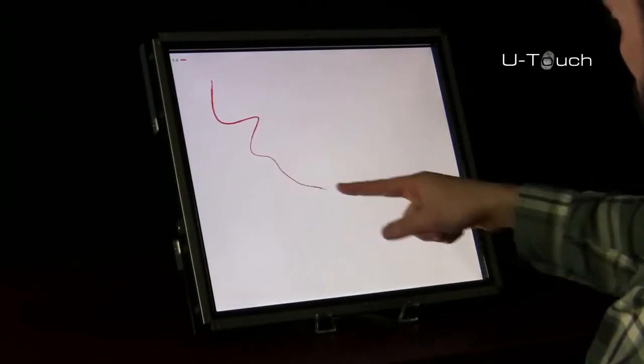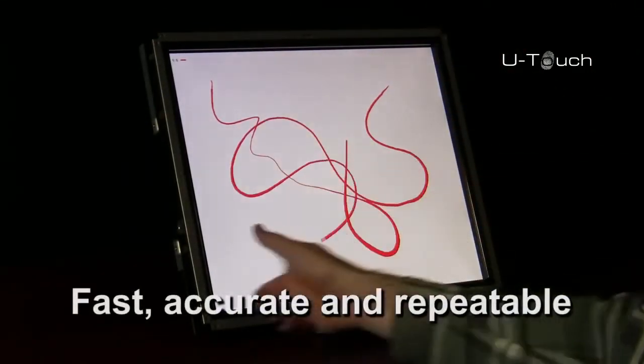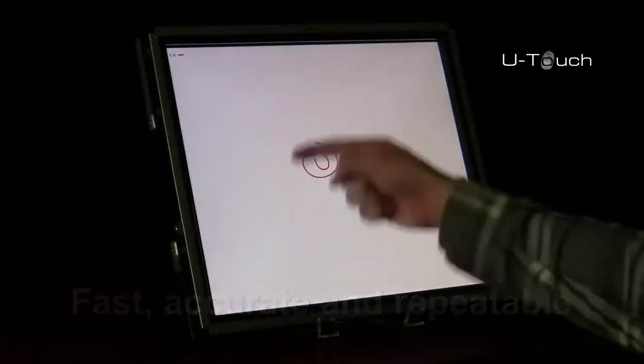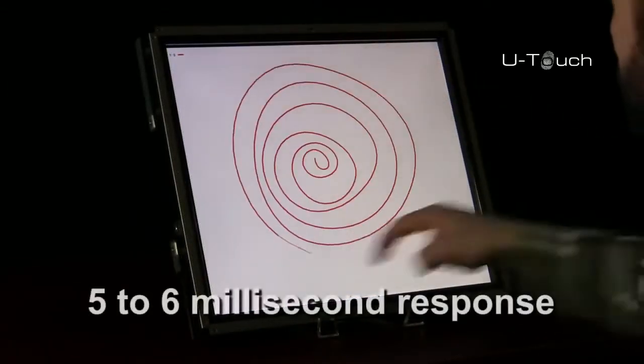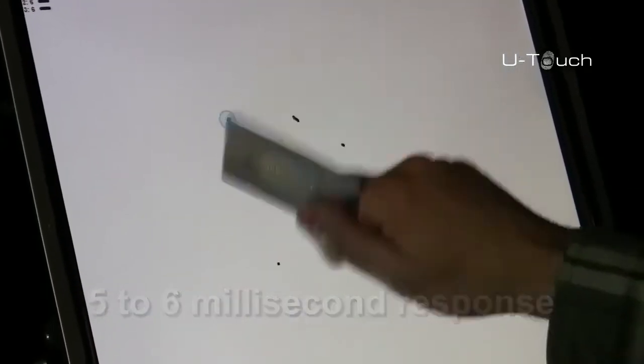The touch experience is critical to a user's perception. It needs to be fast, accurate, and repeatable. Fast is a five to six millisecond response to a touch. Slightly slower and the user gets impatient. Significantly slower and the application is viewed as flawed.